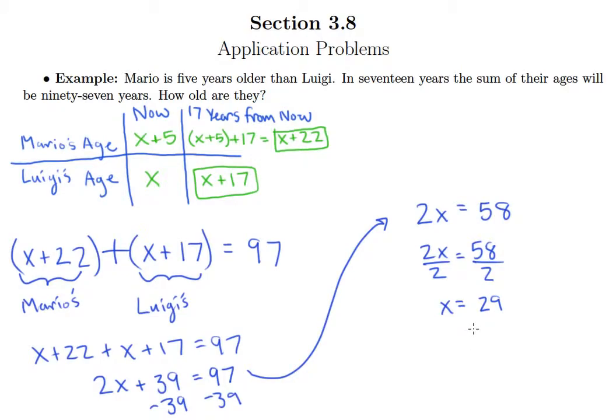But again, remember that we need to make sure we're answering the question being asked. It didn't just ask us to find x, it asked us to find Luigi's age and Mario's age now. So we can already say that Luigi is 29 years old because Luigi was x. And then Mario is 34 years old, and we're getting that from 29 plus 5.